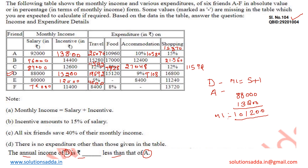We can calculate the annual income by multiplying the monthly income by 12. So the annual income of person D equals 1,01,200 multiplied by 12, which gives us 12,14,400. This is the annual income of person D.